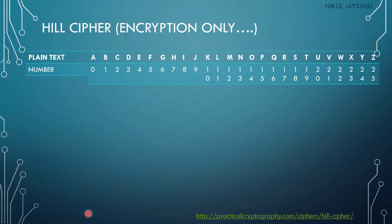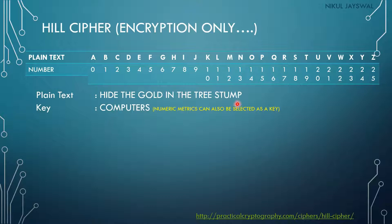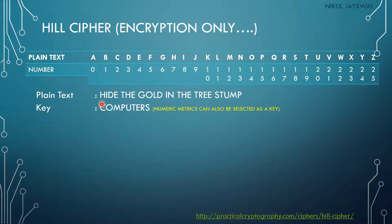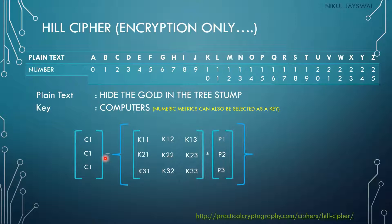Let's see a detailed encryption example. The plain text is 'hide the gold in the tree stem'. We take a three-character block, so we need nine characters of key. The key is 'computer' — C, O, M, P, U, T, E, R, S — nine characters. The first three plain text characters are H, I, D. We assign numbers: H=7, I=8, D=3.